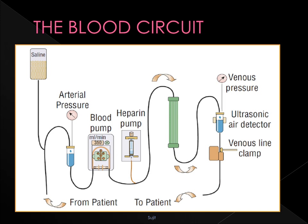The blood circuit is divided into the arterial line — which takes blood from the patient to the dialyser — and the venous line — which returns dialyzed blood to the patient. The arterial line is divided into a pre-blood pump segment and a post-blood pump segment. The pre-blood pump segment has a saline infusion set, and the post-blood pump segment has a heparin line. The blood pump rotates at 200 to 400 ml per minute, and the dialysate pump rotates at double the blood pump rate. In the venous line there is an ultrasonic air detector and two sensors monitoring arterial and venous pressure.